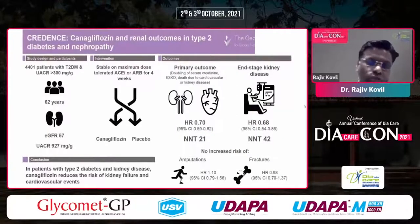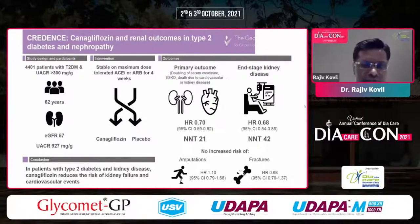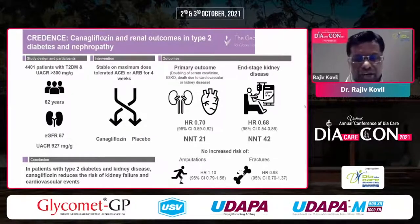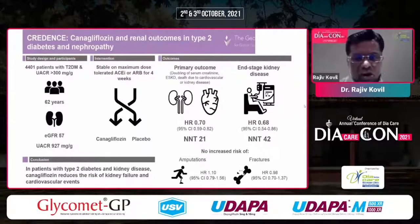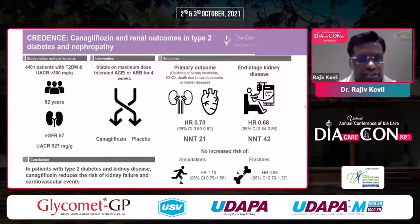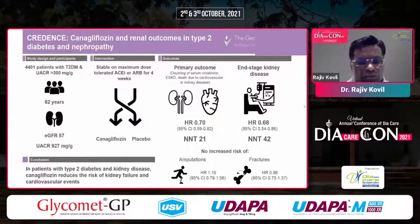We know this patient is in stage 3B chronic kidney disease. We have two fantastic datasets: CREDENCE from canagliflozin and DAPA-CKD from dapagliflozin, which clearly tell us that patients in stage 3 CKD are at very high risk for cardiovascular and chronic kidney events. It is imperative and ethically right to intervene with SGLT2 inhibitors — either canagliflozin or dapagliflozin — to prevent progression of chronic kidney disease. The CREDENCE study looked at 4,400 patients.